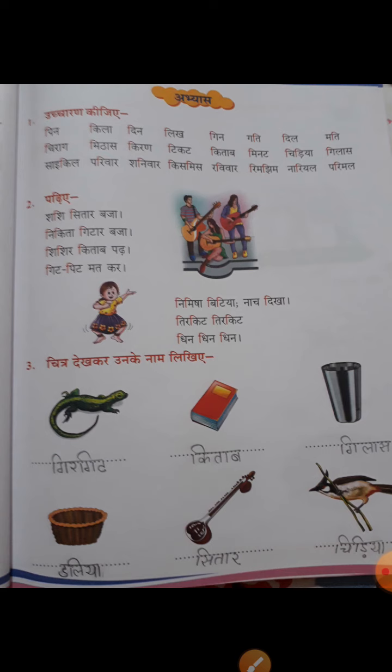There are three-letter words, so you will read them: MITHAAS, KIRAN, TICKET, KITAB, MINUTE, CHILYA, GILAZ.